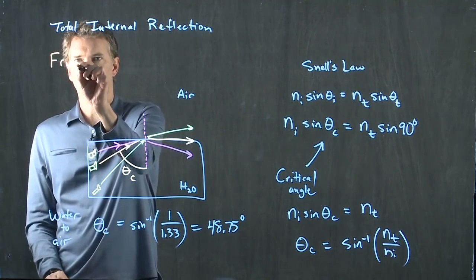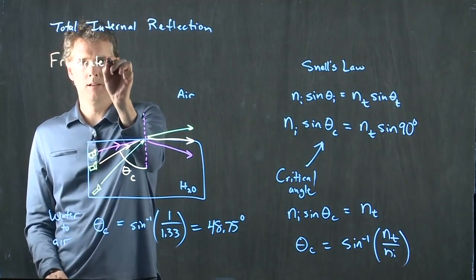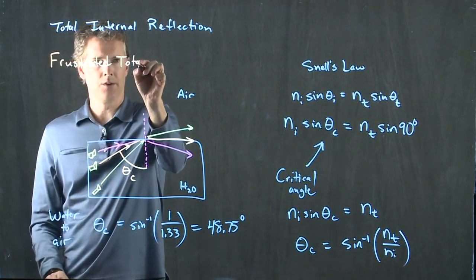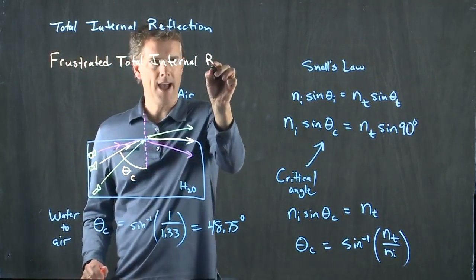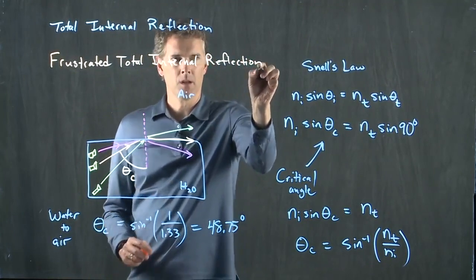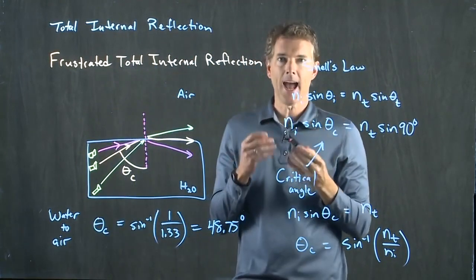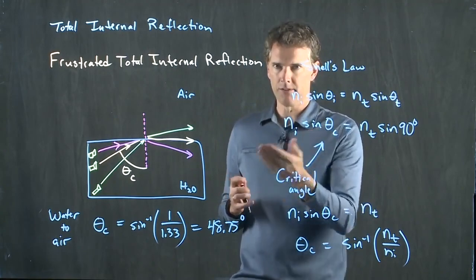And this is called frustrated total internal reflection. You've added something to the surface which pulls that light out of the glass, and now you can see it.